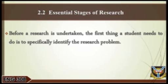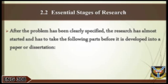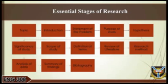Essential stages of research. Before a research is undertaken, the first thing a student needs to do is to specifically identify the research problem. This could be developed from a hunch, a gap in the literature, limitations of a previous study, or an interesting issue or problem affecting human beings in society. After the problem has been clearly specified, the research has to take the following parts before it is developed into a paper or dissertation: topic, introduction, statement of the problem, purpose of study, hypothesis, significance of study, scope of study, definitions of terms, review of literature, research method, analysis of data, summary of findings, and bibliography.